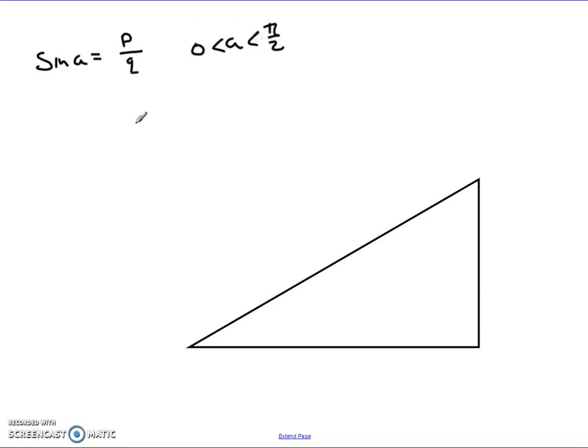We are able to do that because we can imagine taking sine A equals P over Q, setting up and drawing a right angle triangle and naming the angle here A. We know that sine A is equal to the opposite over the hypotenuse, but we know the values of sine A are P over Q. So if I compare these two,